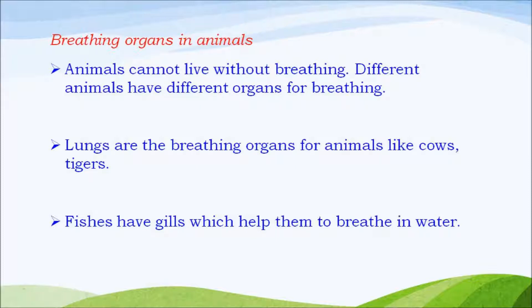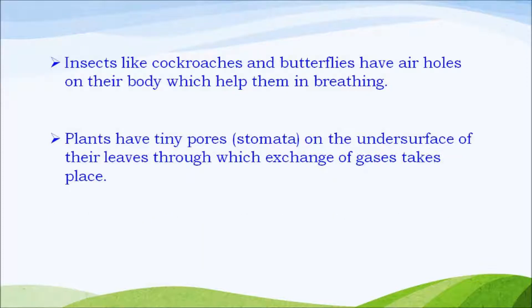Breathing organs in animals: animals cannot live without breathing. Different animals have different organs for breathing. Lungs are the breathing organs for animals like cows, tigers and human beings. Fishes have gills which help them to breathe in water. Insects like cockroaches and butterflies have air holes on their body which help them in breathing. Plants have tiny pores called stomata on the undersurface of their leaves through which exchange of gases takes place.